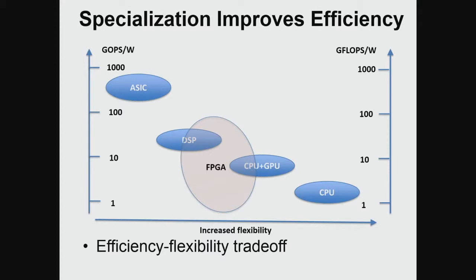If you want to be really efficient in performing certain tasks, you can design dedicated hardware. For example, a dedicated fast Fourier transform processor can achieve on the order of a teraop per watt — where op is equivalent to an 8-bit integer addition — but that chip would only be capable of doing fast Fourier transforms and nothing else.